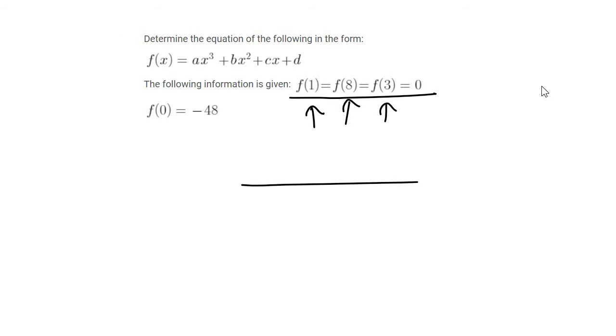So if I gave you a graph that had x intercepts at 1, at 8, and at 3, so 1, 3, and 8, then to find the equation, all you do is you use the bracket method, where you say x minus 1, x minus 3, and x minus 8.